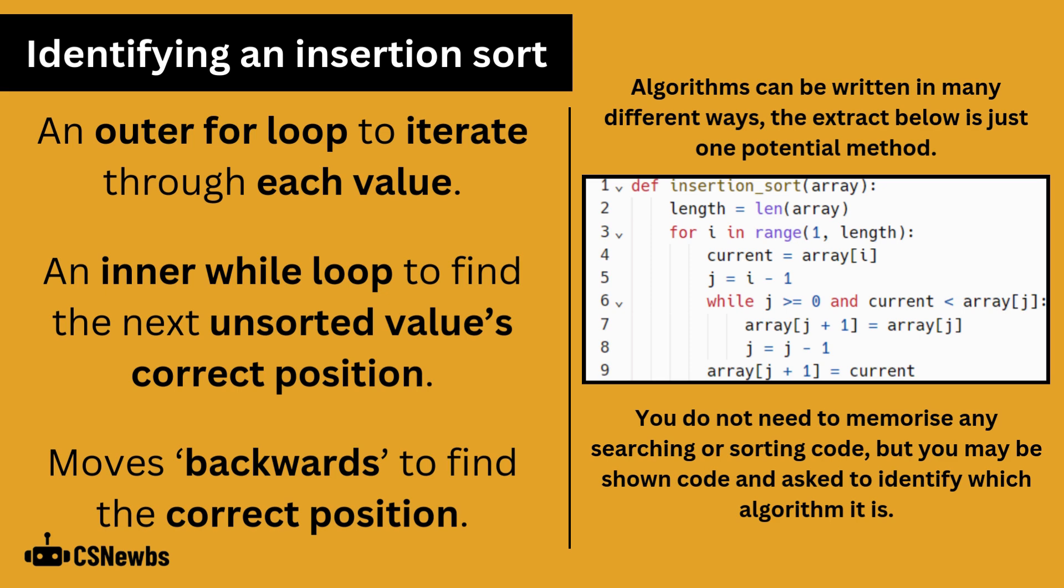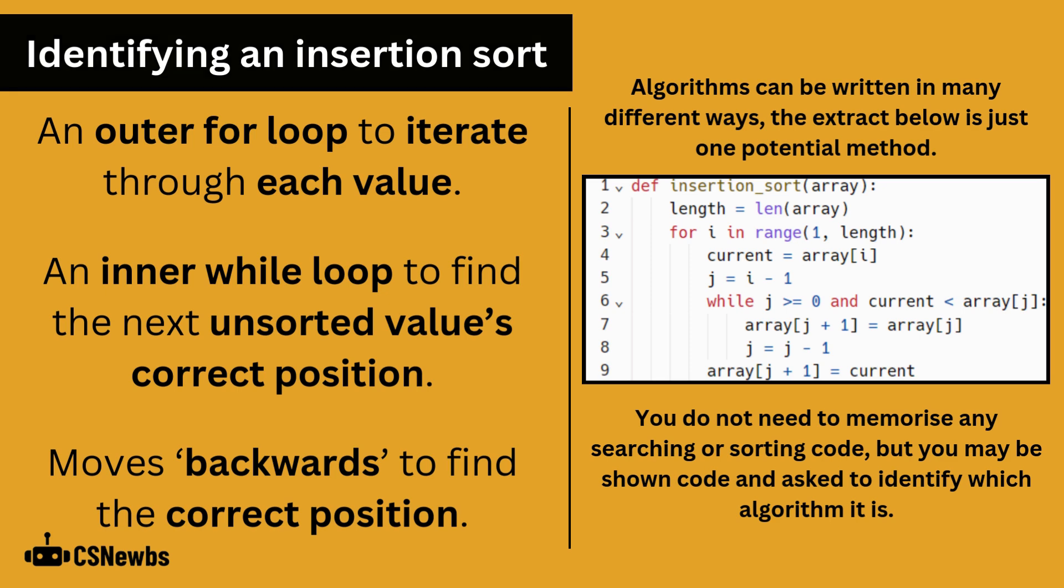You can see on lines 5 and 8 that the variable decreases by 1. This is in contrast to a bubble sort where it will move from the left to the right through the list of values.